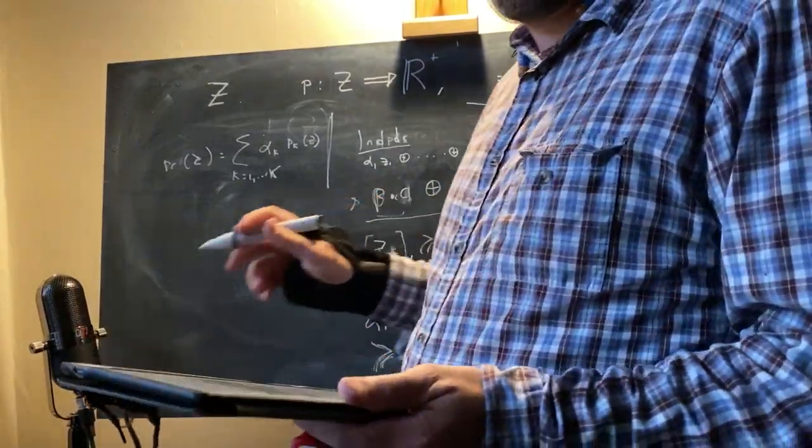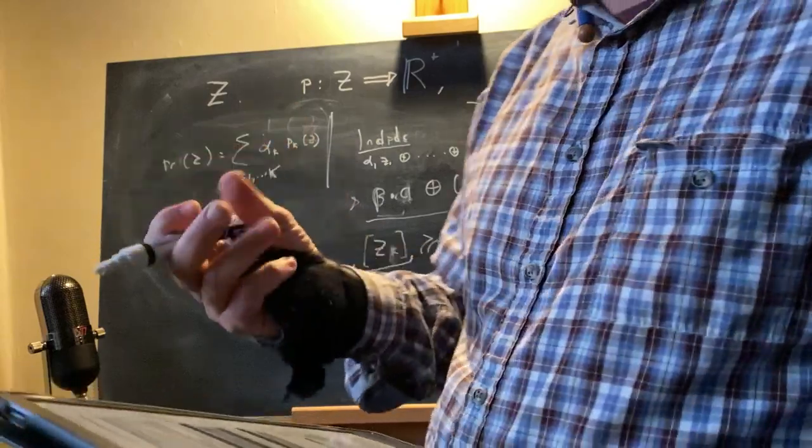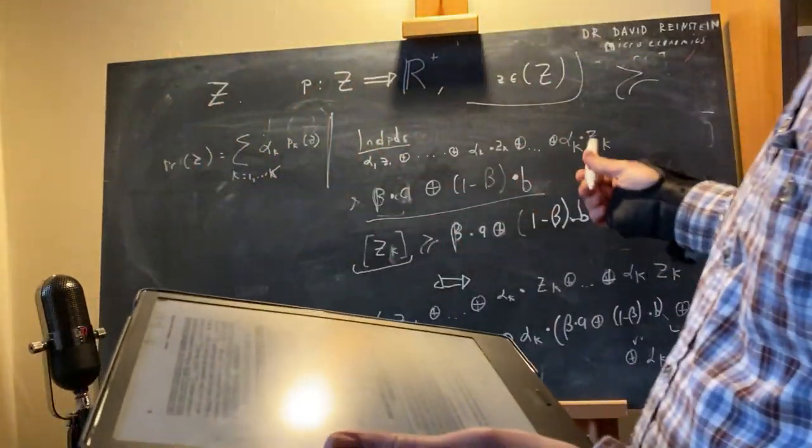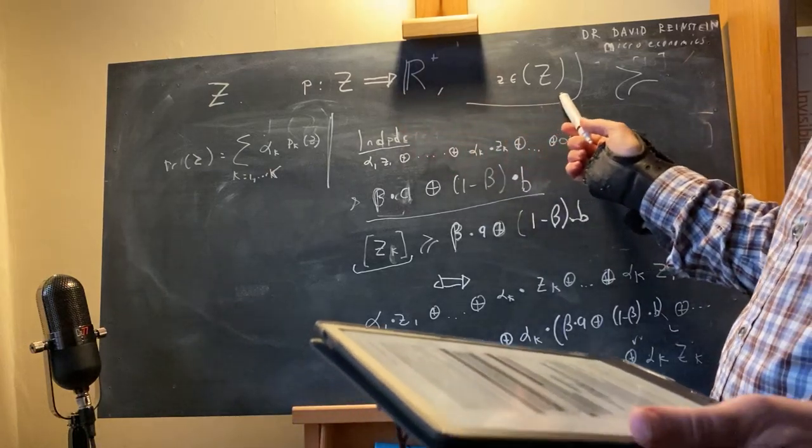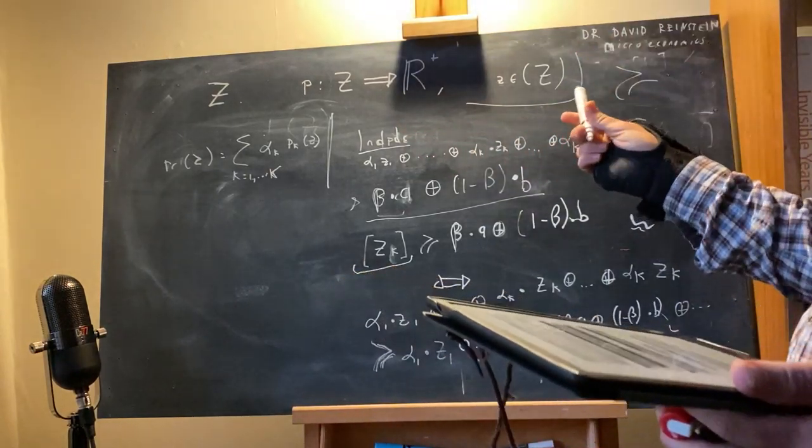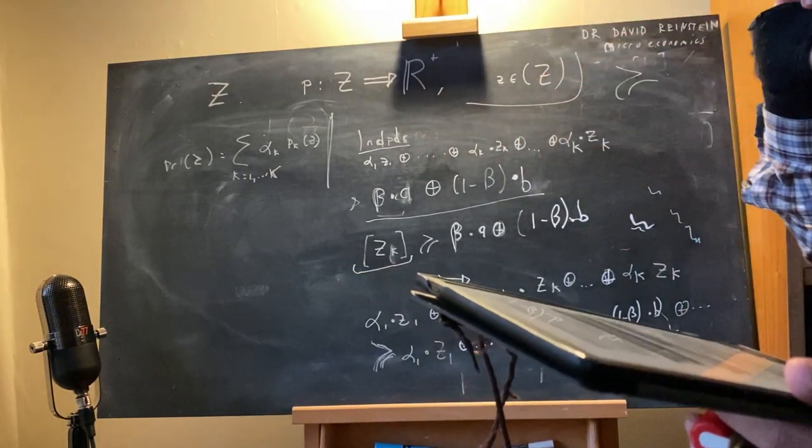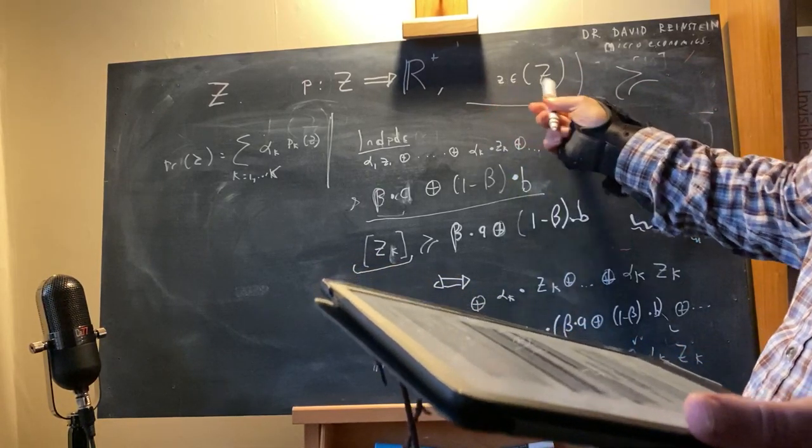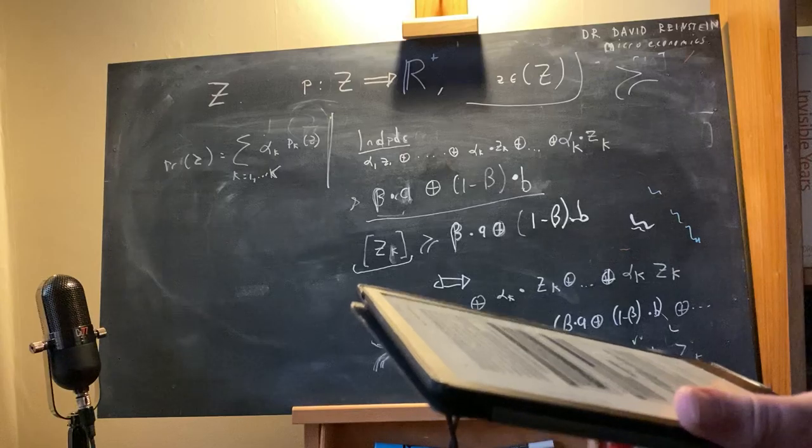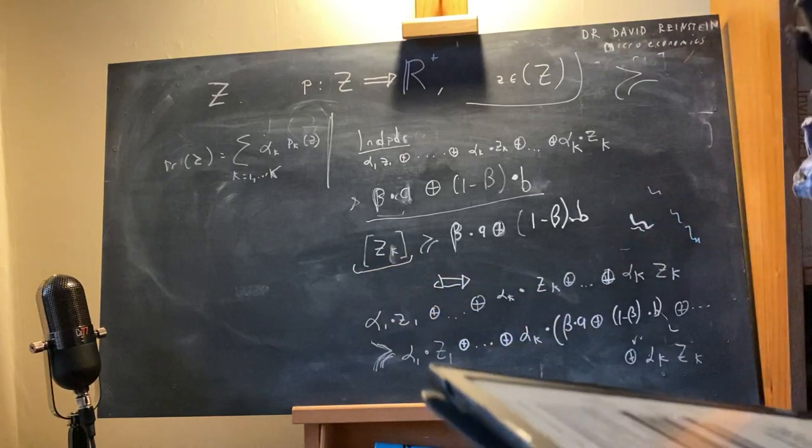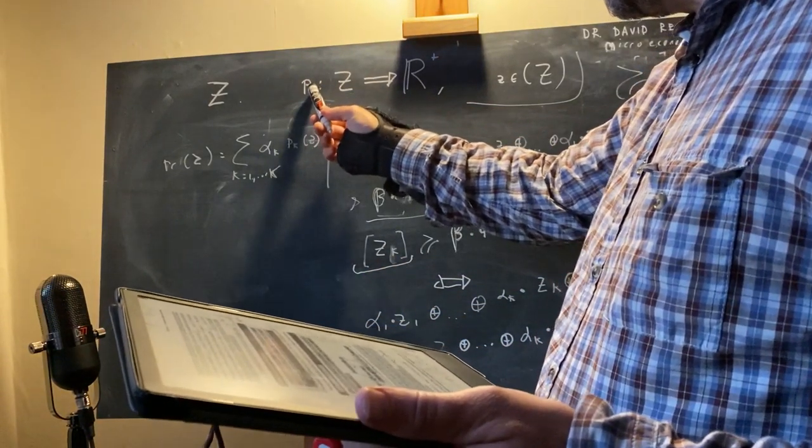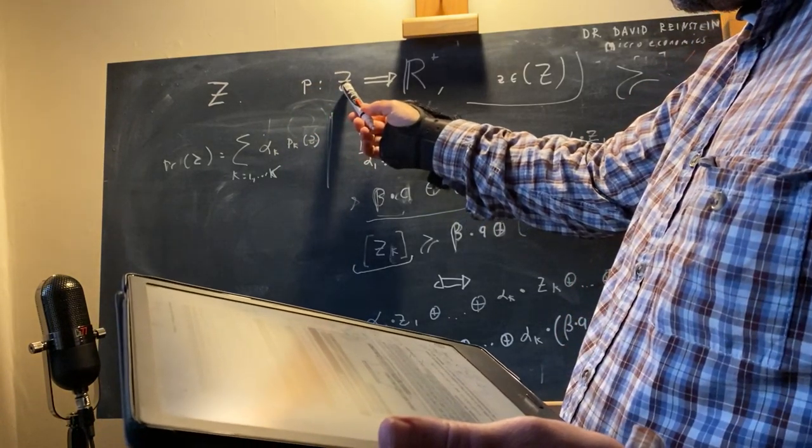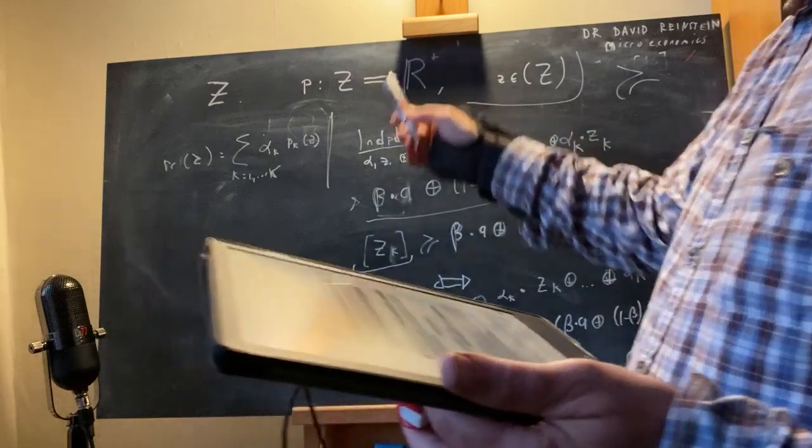So we're thinking about people's preferences over these lotteries, over these different, well, we have the set Z of possible things that might occur, elements little z in Z, and we can think of these lotteries such as p, which maps from every element in little z to some probability.